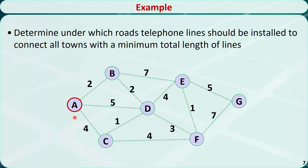Now let's start from node A. Checking its direct neighbors B, C, and D, the nearest node is node B — the distance from B to A is 2. Let's connect A and B.